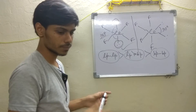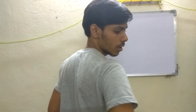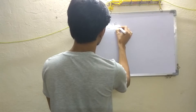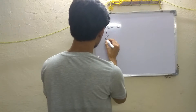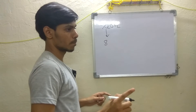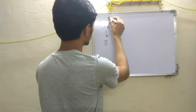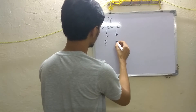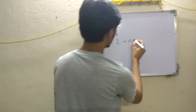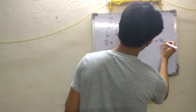Now let us take another example: XeOF2. What will be the structure? The central atom is xenon with eight electrons. In this rule we only count the monovalent atoms, so oxygen is not counted. There are two fluorine atoms, each contributing one electron, giving two electrons. Eight plus two equals ten, and ten divided by two is five, which means a trigonal bipyramidal structure.